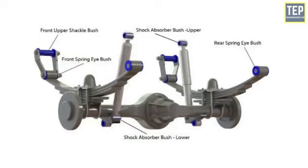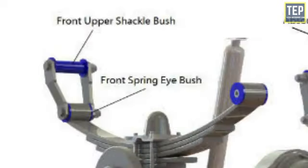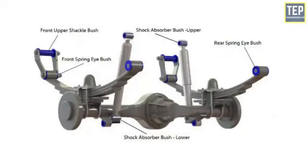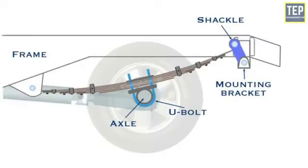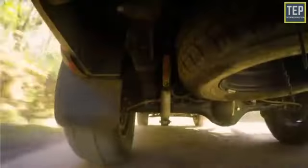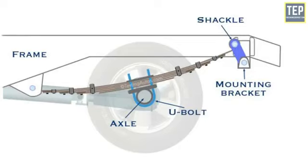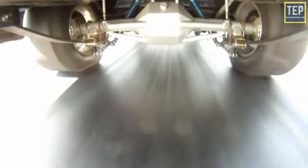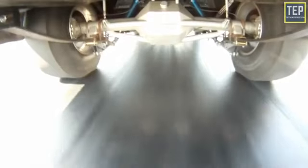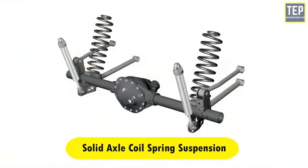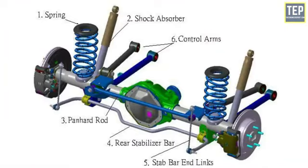In solid axle leaf spring suspension, leaf springs are used as suspension members. The longest spring bends into a circle to form a spring's eye, which is bolted to the spring hanger. The other end is attached to a shackle, which allows a change in length of the leaf spring when it bends and includes a rubber bushing that absorbs vibrations. The center portion of the leaf spring is attached to the rear axle housing with U-bolts, and a rebound clip holds all the springs together. This type is used in trucks intended for severe operations with high payload rear axles.